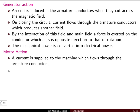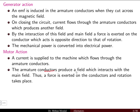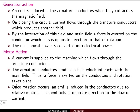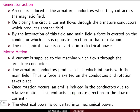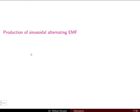In the motoring action, current is supplied to the armature conductors. The armature conductors then produce a field which interacts with the main field, similar to the generating action. A force is exerted on the conductor and rotation takes place. Once rotation occurs, an EMF is induced in the conductor which acts in the opposite direction to the flow of current. Thus the electrical power is converted to mechanical power.